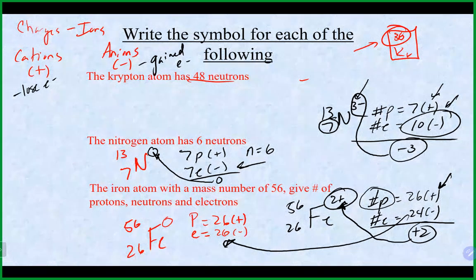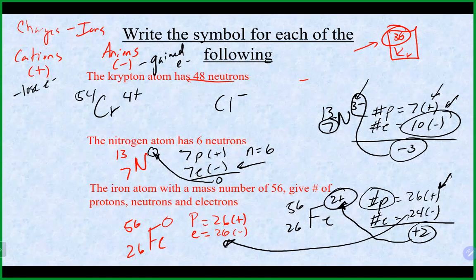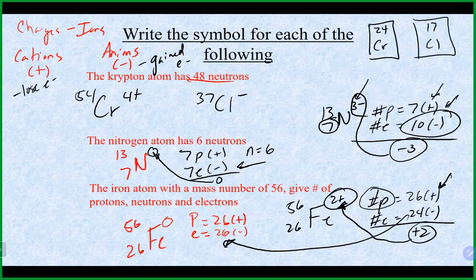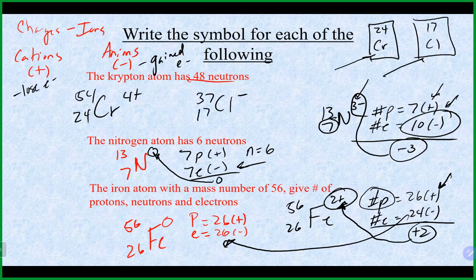Let's try some practice: chromium with a plus-four charge and mass number 54, and chlorine with a minus-one charge and mass number 37. Find the protons, electrons, and neutrons for each. Looking up these elements on the periodic table: chromium has atomic number 24, and chlorine has atomic number 17.